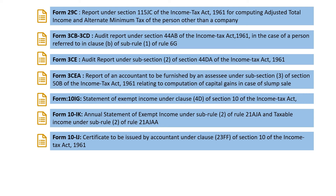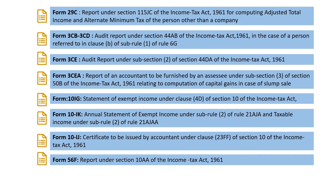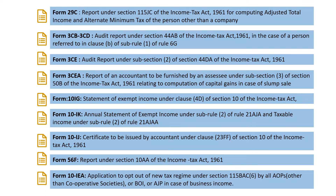Form 10IJ is a certificate to be issued by an accountant under clause 23FF of section 10 of the Income Tax Act. Form 56F is a report under section 10AA of the Income Tax Act. There is also an addition: Form 10IEA, which is an application to opt out of the new tax regime under section 115BAC subsection 6, by all association of persons other than cooperative societies, or body of individuals, or artificial judicial persons in case of business income.